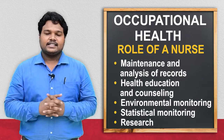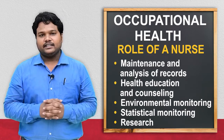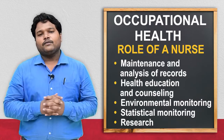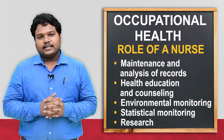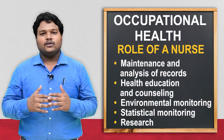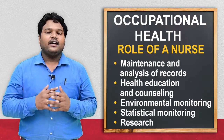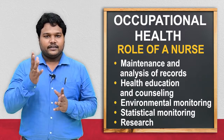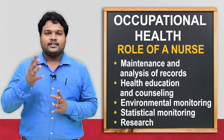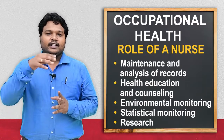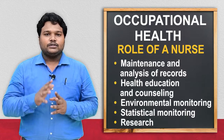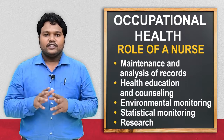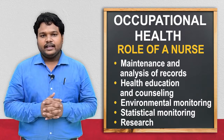The last role is research. Research is one of the important aspects of occupational health. By conducting repeated research studies, we can identify what health problems workers are suffering with and plan what health measures are needed. For example, in HAL there is a hospital for those employees. If you conduct research studies among those employees, you will know what health problems they have and plan interventions in that hospital.